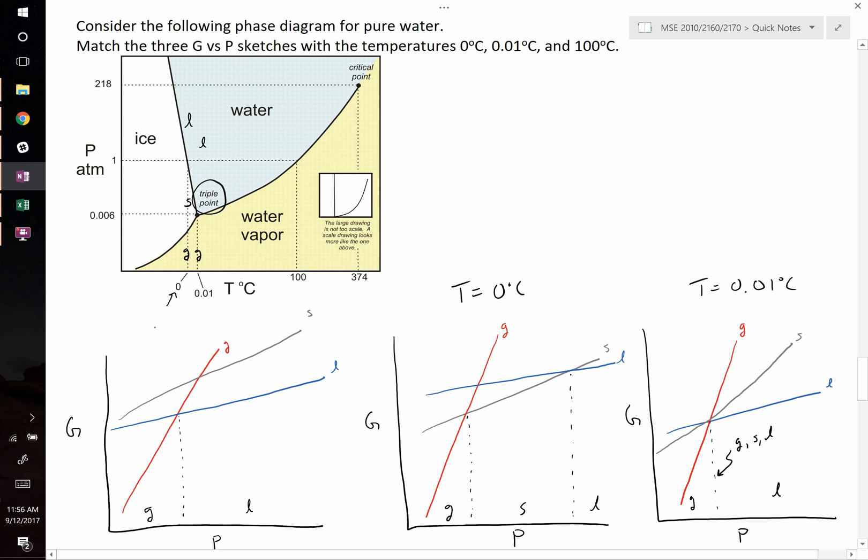Finally, the last one, we know it should be temperature equals 100 degrees Celsius, but let's double check. We're going to go from a gas, and as you increase the pressure, you're going to go to a liquid, and at no point will you see the solid. And sure enough, in this one, we go from a gas to a liquid, and at no point do we see a solid forming.